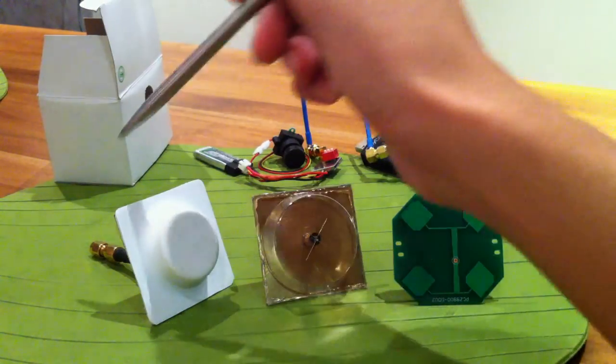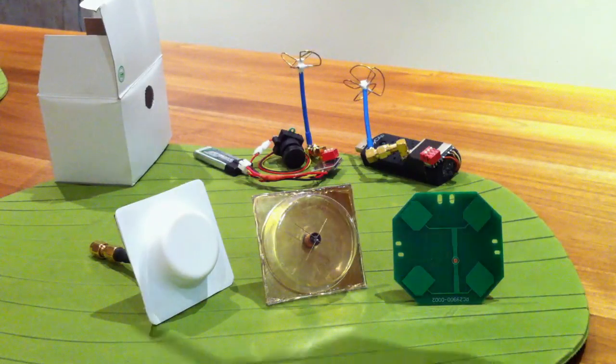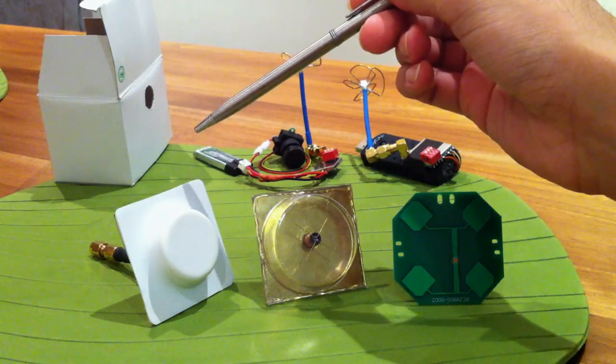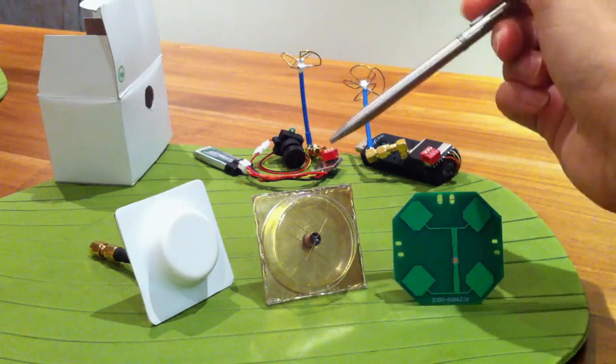The other two here are crosshair antennas with a gain of 8.5dB. This one with a nice white cover is a product of TrueRC, while the other is a homebrew version.